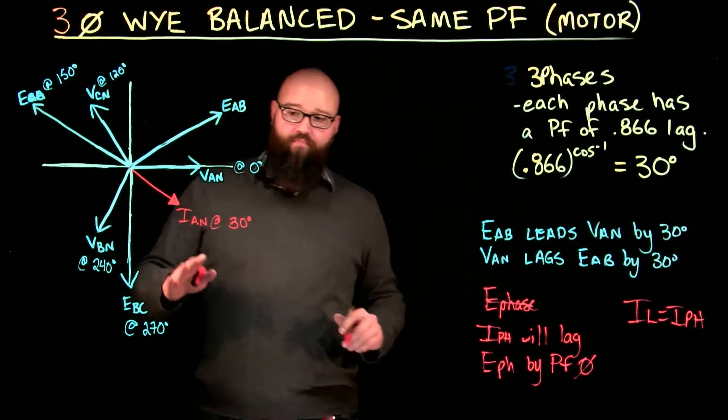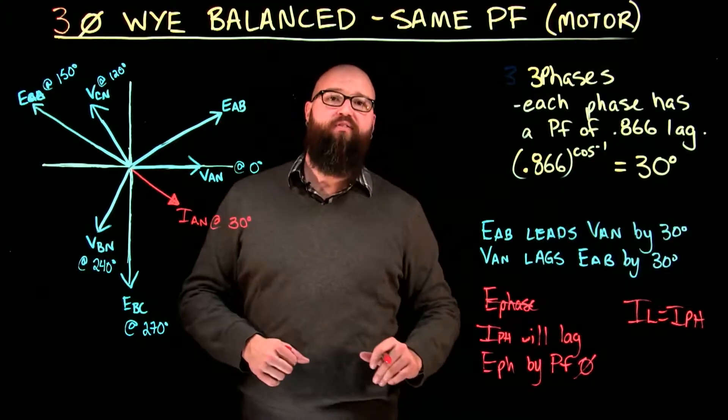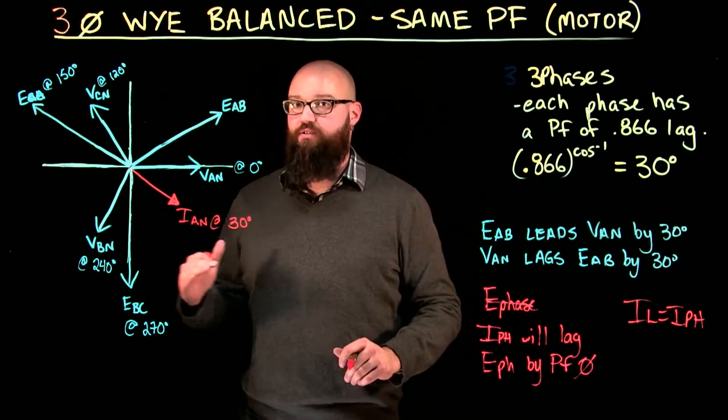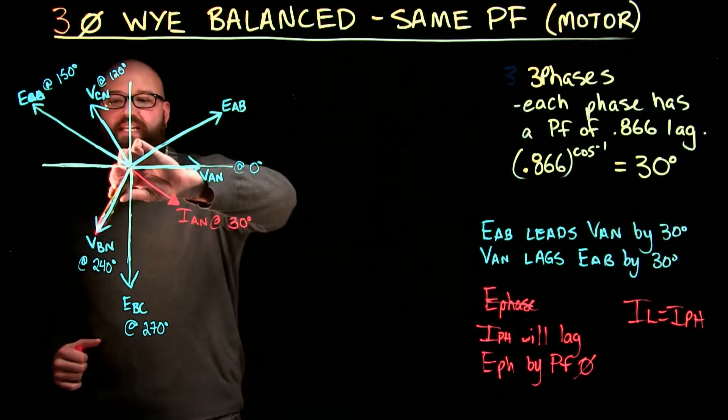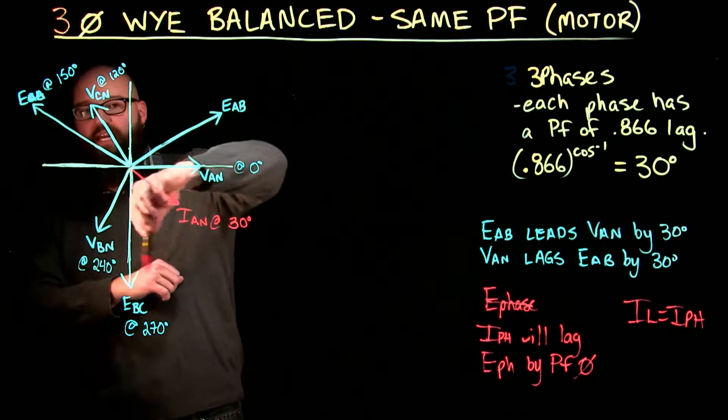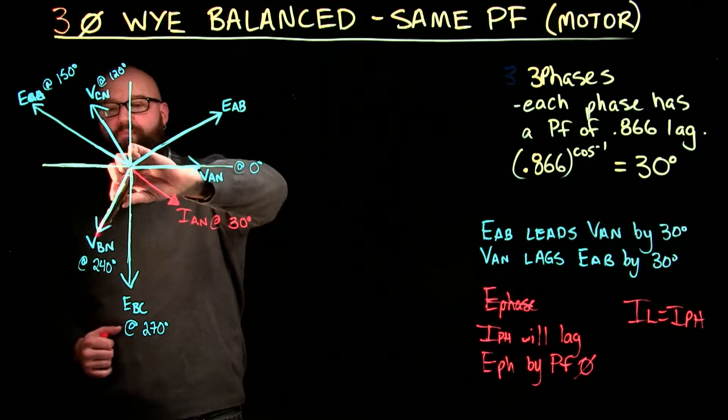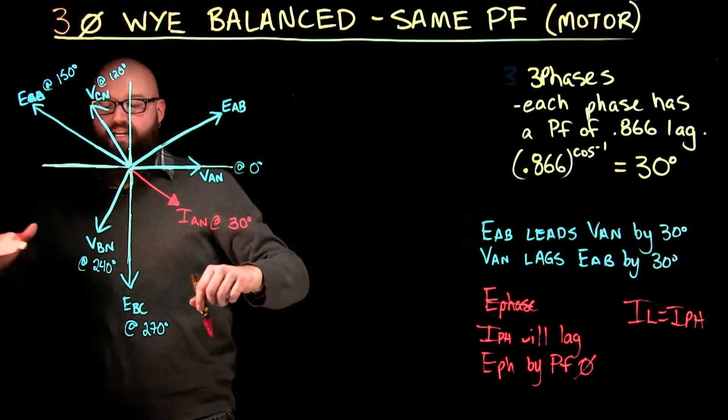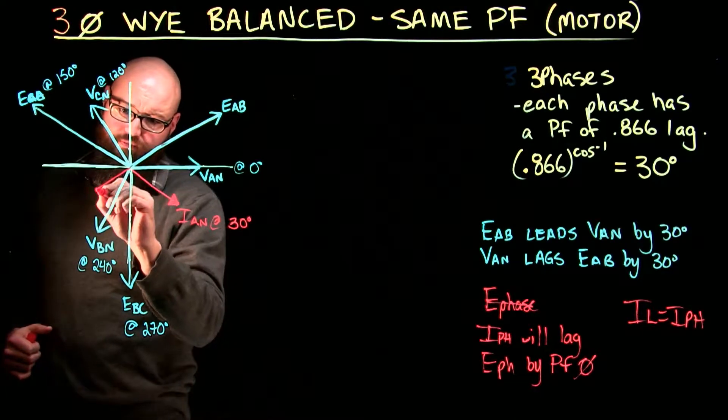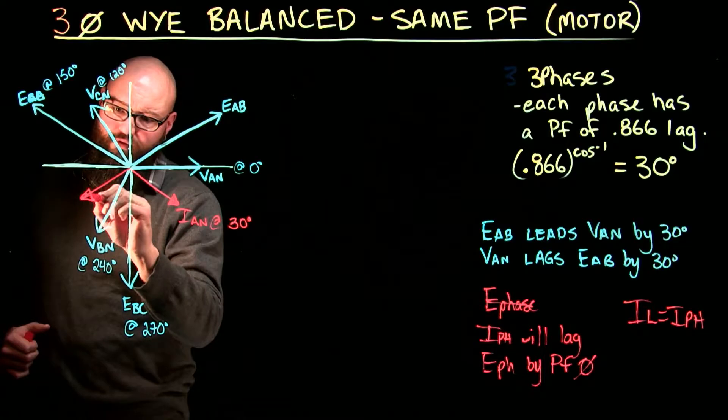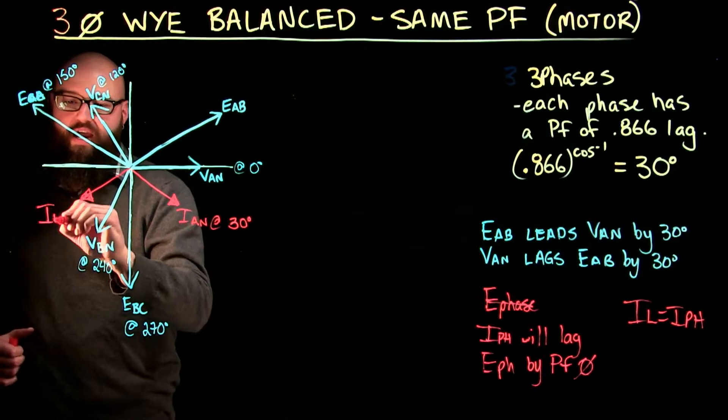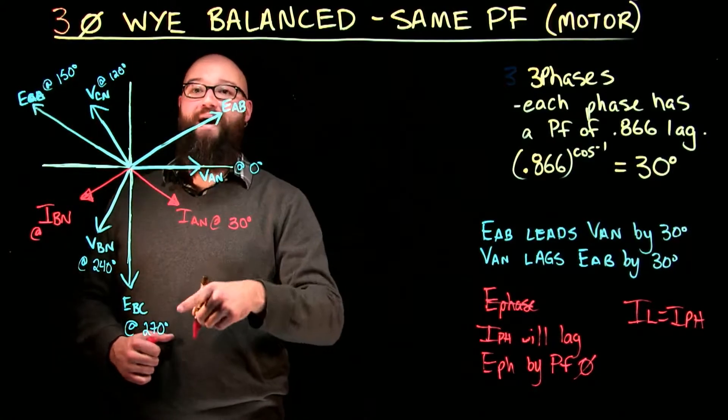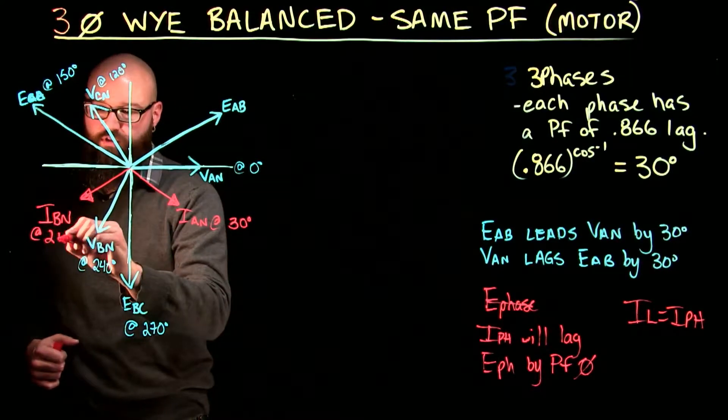Now, iB to N, because it has the same power factor, is going to lag VB to N by 30 degrees as well. If my VB to N is right here, and my phasors are rotating counterclockwise, if I'm lagging, that means I'm going to go 240 degrees minus 30, which should put us right about here. There is my iB to N, which is at 240 minus 30, 210.